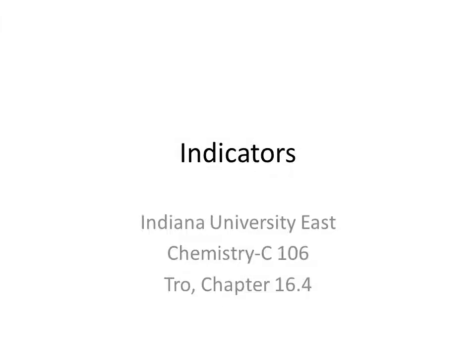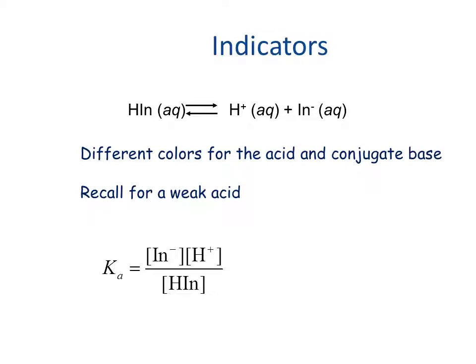Indiana University East Chemistry C106 Indicators. An indicator is a substance for which there is a different color for the acid and conjugate base forms of the compound.